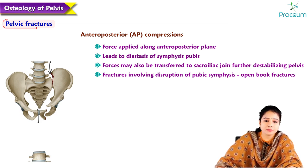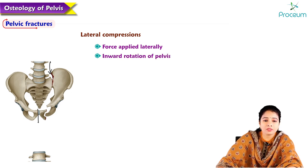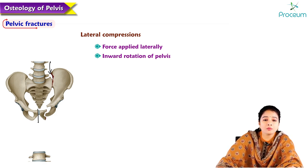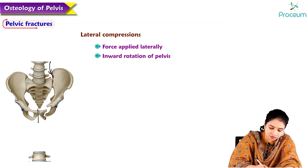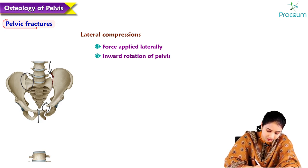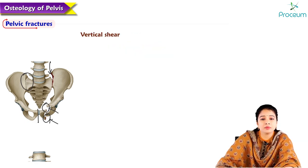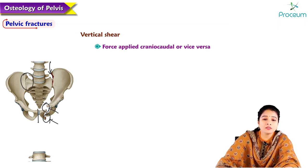Lateral compression applies force laterally, resulting in inward rotation of the pelvis. The sacroiliac region and pubic rami are most susceptible to fractures in these injuries. Vertical shear applies force craniocaudally or vice versa, resulting in vertical displacement of the hip bone.